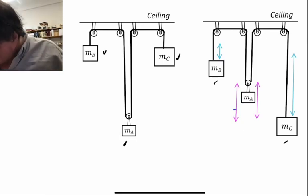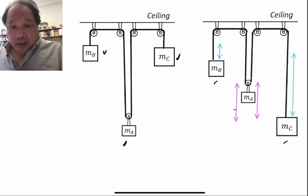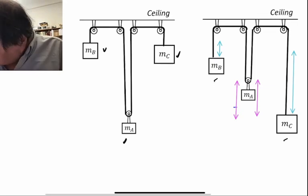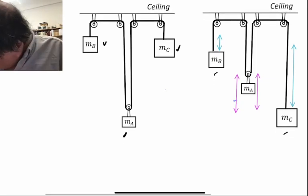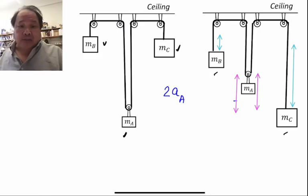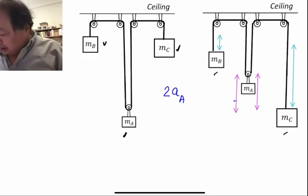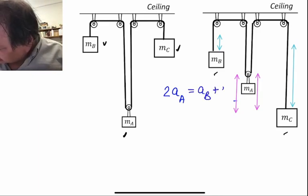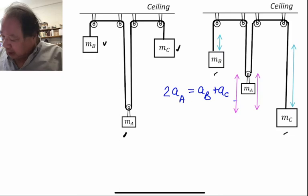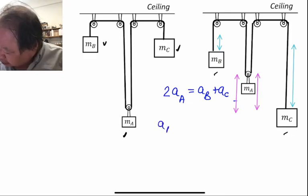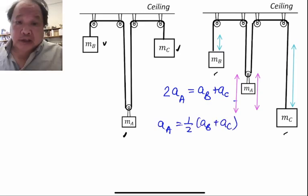So in terms of acceleration, two acceleration A's, that's how much went up on the A's, has to be in magnitude equal to aB plus aC. In other words, aA is the average of the other two accelerations.